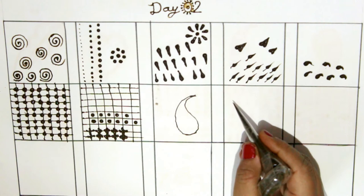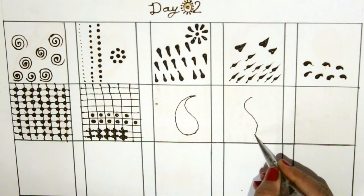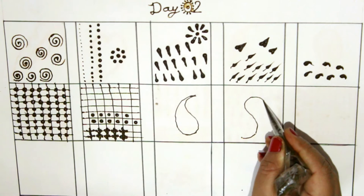For the ninth design, we will repeat the whole previous process but this time downward. Make an S again and then join it with a curvy line.